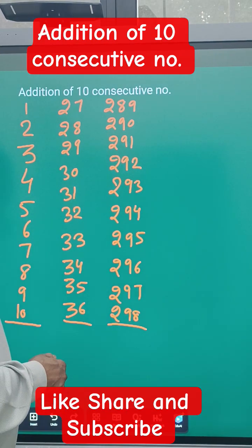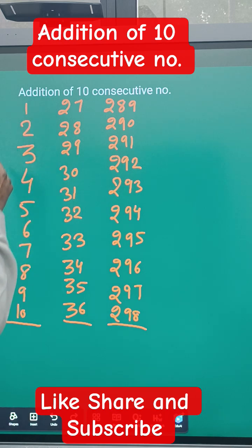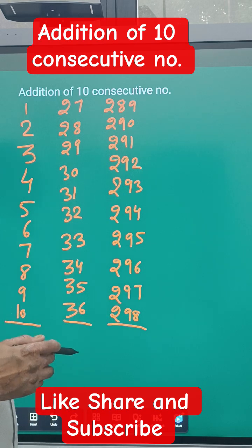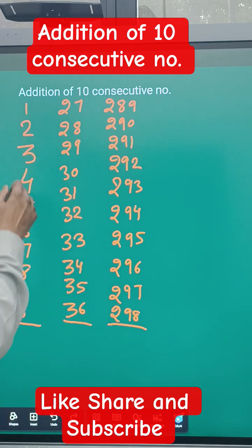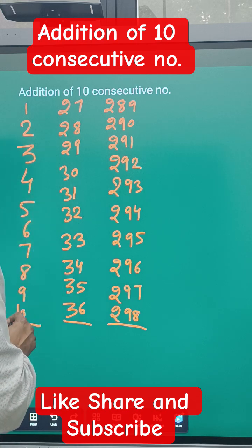Okay, addition of 10 consecutive numbers. Whenever you have numbers starting from anywhere, but they have to be consecutive - like all the numbers will be one after the other. So 10 numbers' addition, like 1, 2, 3, 4, 5, 6, 7, 8, 9, 10.